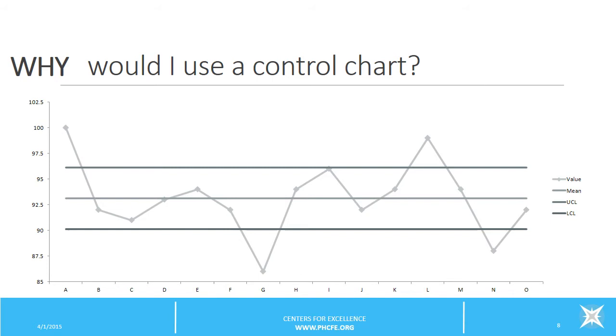So why would you use a control chart? This is another example of a control chart. And it can help you identify and see what type of variation is happening in your process. Again, the control chart has the mean or average centerline, has an upper control limit, and the lower control limit.